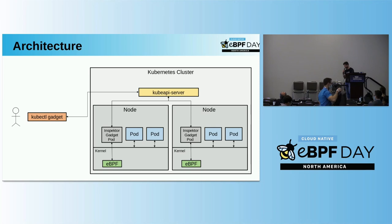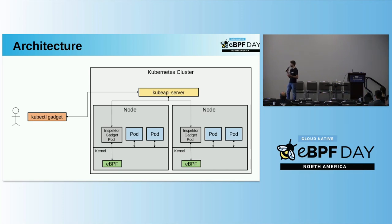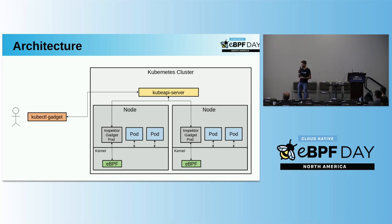This is the Inspector Gadget architecture. We deploy Inspector Gadget as a DaemonSet on the cluster, so there is one Inspector Gadget pod per node. We inject eBPF programs into the kernel, which is shared between all pods running on the same node, allowing us to trace information from those different pods. The user interacts via the kubectl gadget plugin, and we implement a controller approach using the API server and custom resources, which Inspector Gadget uses to understand what operation has to be done.